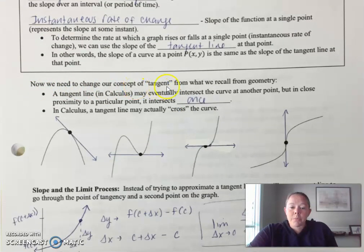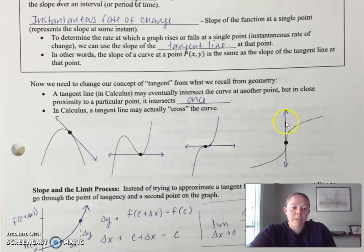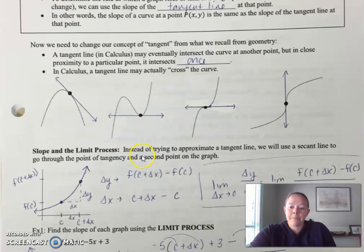We need to change our concept of tangent from what we recall from geometry. A tangent line in calculus may eventually intersect the curve at another point, but in close proximity to a particular point, it intersects once. Here are some examples of tangent lines. Around this point, this is a typical geometry problem, but you'll notice it hits the curve at another point. In calculus, it is actually okay if the tangent line crosses the curve.